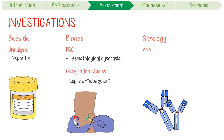Antinuclear antibody, or ANA, is very sensitive for SLE. Conversely, anti-dsDNA and anti-Smith antibodies are highly specific.